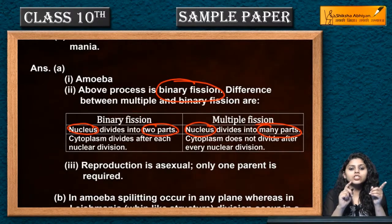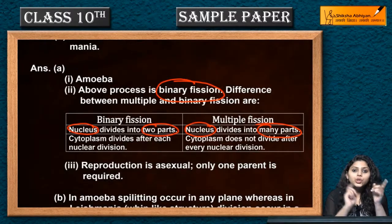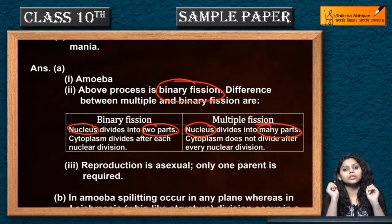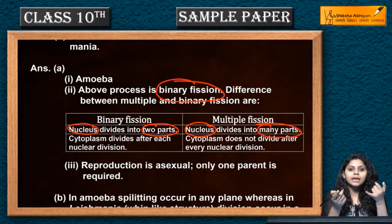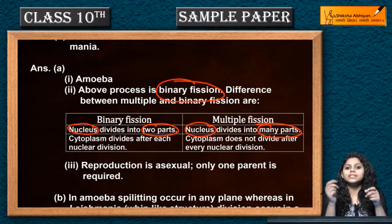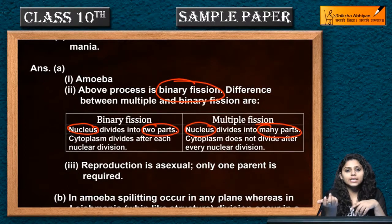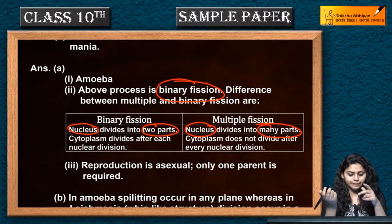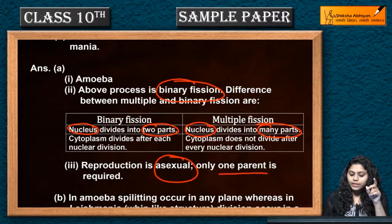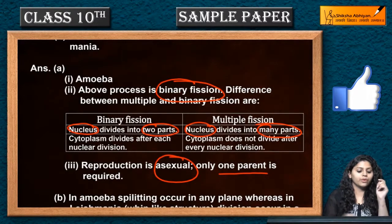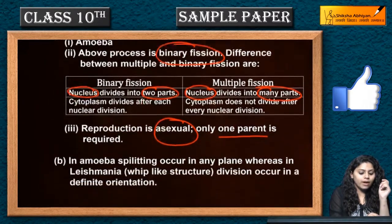In binary fission, when there is nuclear division, the cytoplasm also divides. But in the case of multiple fission, the nucleus divides multiple times, resulting in a multinucleate state. This is asexual reproduction, which involves only one parent.